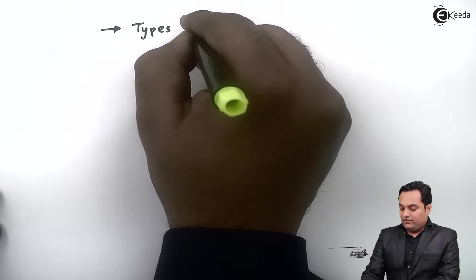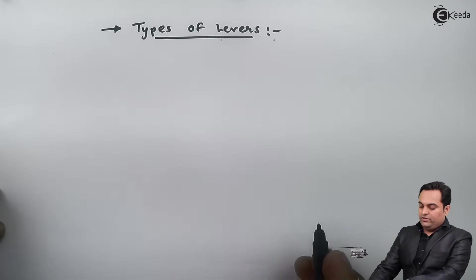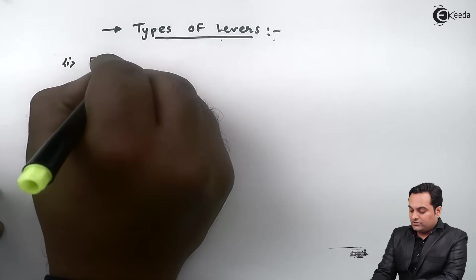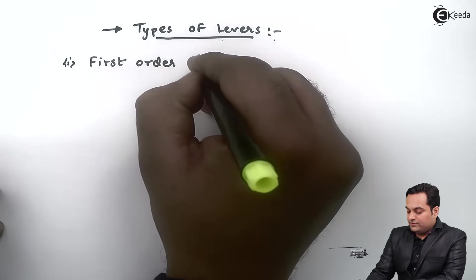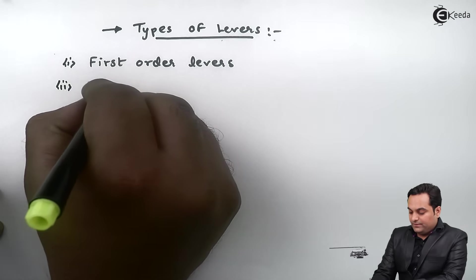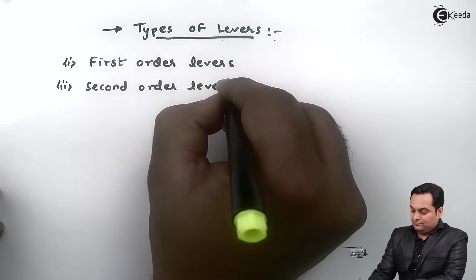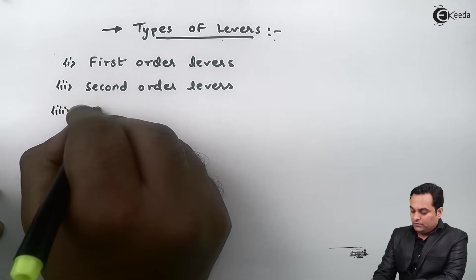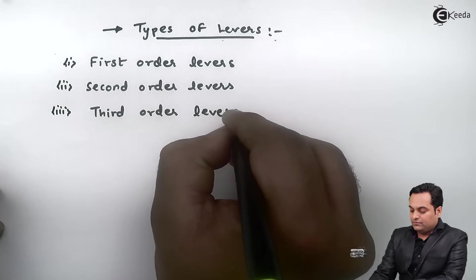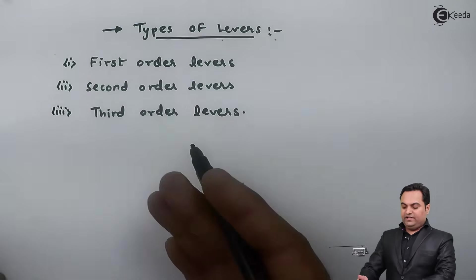According to engineering applications, there are three types of levers: first order levers, second order levers, and third order levers.